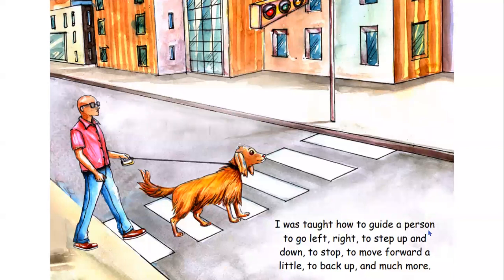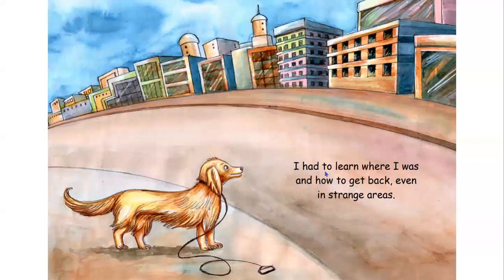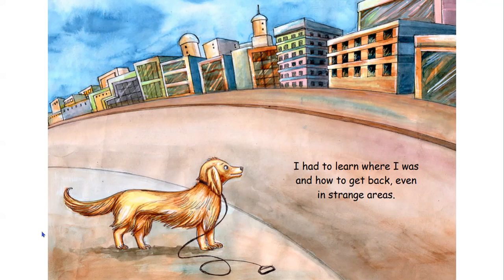I was taught how to guide a person to go left, right, to step up and down, to stop, to move forward a little, to back up, and much more. I had to learn where I was and how to get back, even in strange areas. Take a look at this illustration, students — does this look like a busy city? Give me a thumbs up or thumbs down. What are some clues that tell you that this is a busy area? Good job. It looks like there's a lot of buildings and a lot of people. They might work there or live there — it's a populated area.